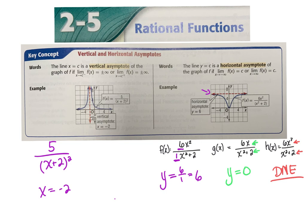To summarize the shortcut for horizontal asymptotes: if the numerator degree equals the denominator degree, use the ratio of the leading coefficients. If the numerator degree is smaller than the denominator, the horizontal asymptote is always y equals 0. And if the numerator degree is larger than the denominator, you will not have a horizontal asymptote.